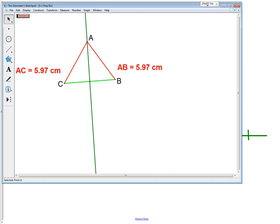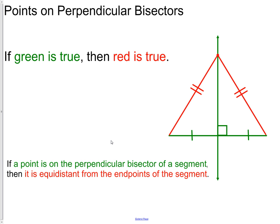Whenever I stop, the distance from A to C is always equal to the distance from A to B. So to finish the statement: if a point is on the perpendicular bisector of a segment, then it is equidistant from the endpoints of the segment. Notice in the picture the two congruency marks on the red segments, and the two green pieces are cut into two equal pieces.